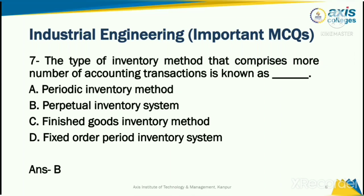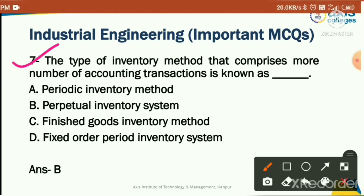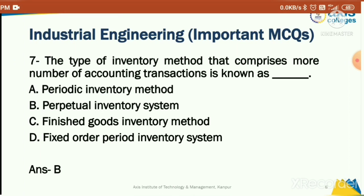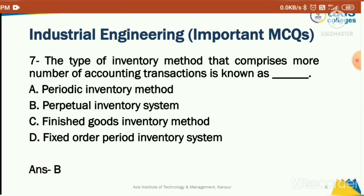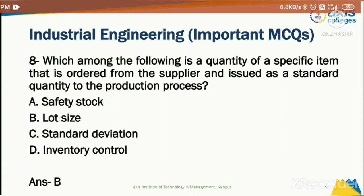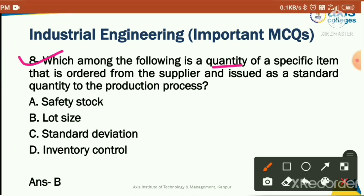The type of inventory method that comprises a more number of accounting transactions is known as: periodic inventory method, perpetual inventory method, finished goods inventory method, or fixed order period inventory system. The correct answer is option B: perpetual inventory system.